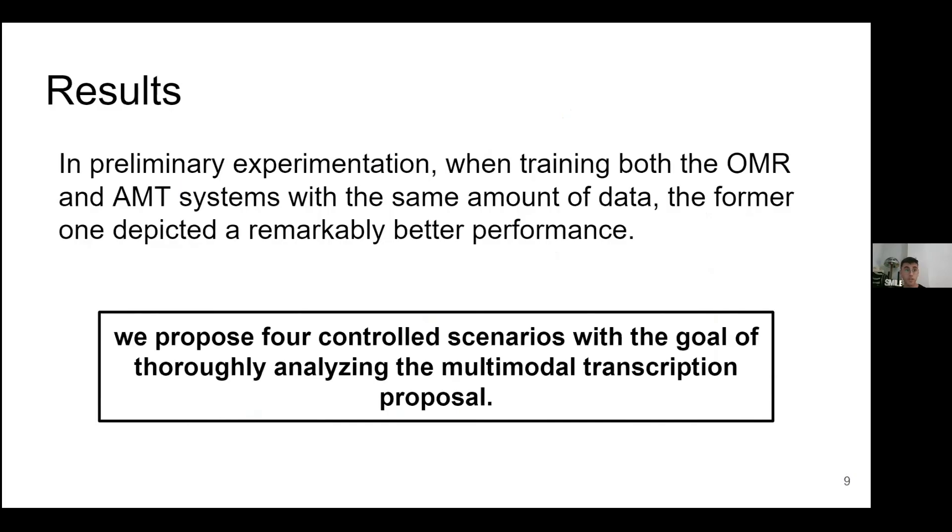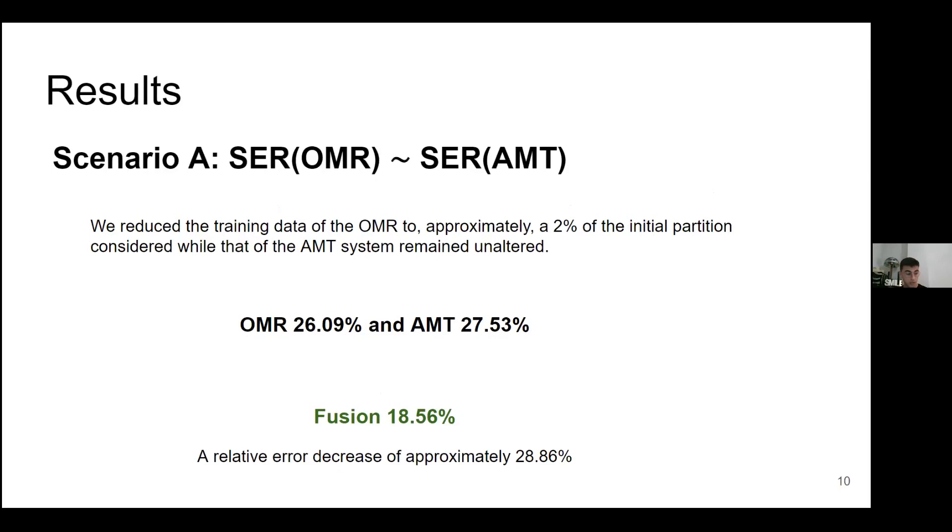About our results, we have to say that in preliminary experimentation when training both the OMR and AMT system with the same amount of data, we get very poor results with OMR. So in this case, we propose four controlled scenarios. The first one is a scenario if we have the same error in OMR and AMT. We can see that we have a relative error decrease of approximately 30% of error, so the fusion is useful.